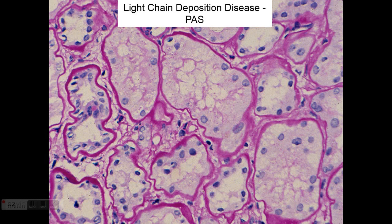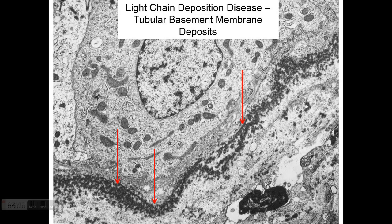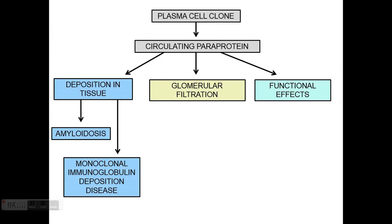Deposits can also be seen along the tubular basal membranes, which become thicker and more prominent, lighting up with the restricted light chain on immunofluorescence. By electron microscopy, these deposits are very dense and powdery, running along the tubular basal membranes and also the glomerular basal membranes.